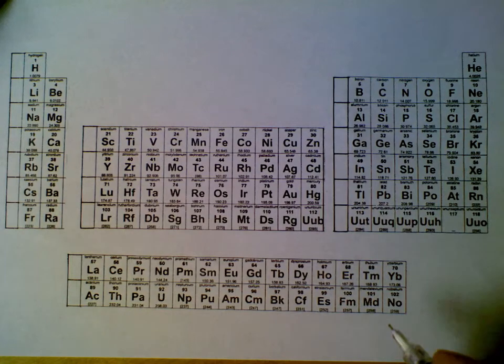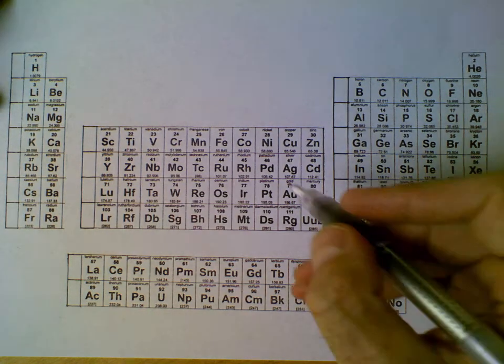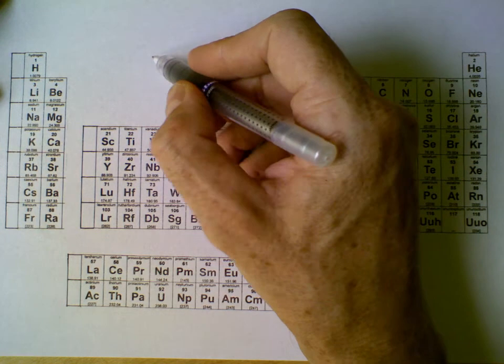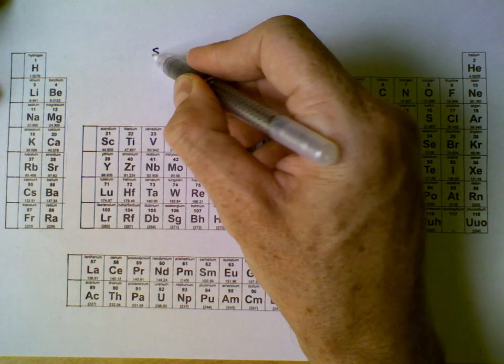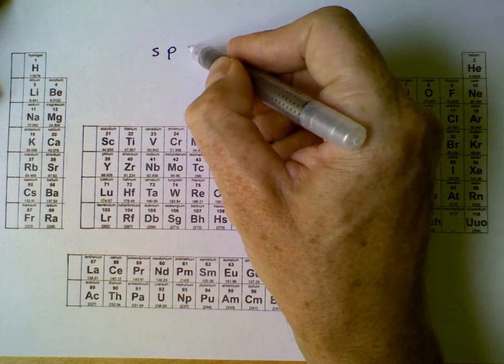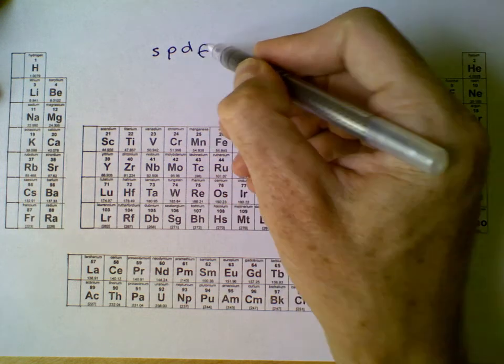How to prepare your periodic table for quantum mechanics questions. Remember that the order of orbital types are S, P, D, and then F.